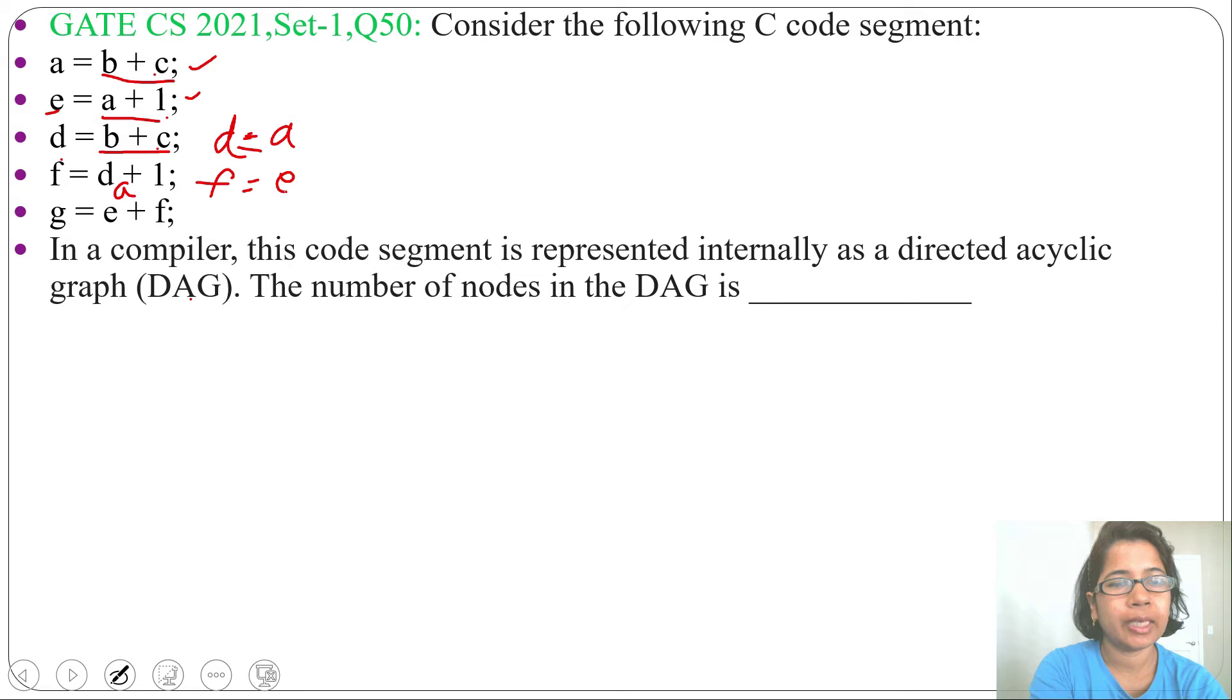Next, g equals e plus f. Now simplification is done. Next, I will construct the DAG.